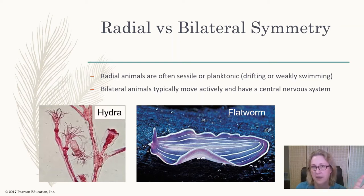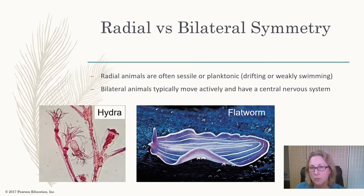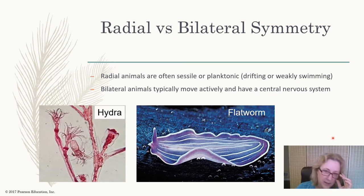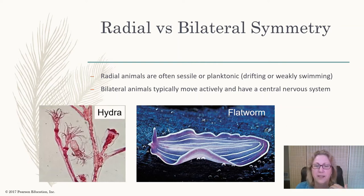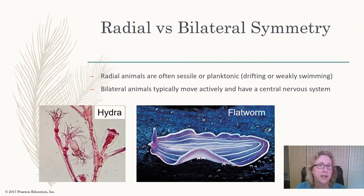There are some general differences between organisms with radial symmetry versus bilateral symmetry. Organisms with radial symmetry tend to be slow-moving or not moving at all — sessile, meaning they sit in one place, usually attached to a rock, or planktonic, meaning they drift around. Jellyfish do propel themselves, but they don't swim the same way a fish does. Bilateral animals tend to be more active, move with their head forward, have directional motion, and be faster.